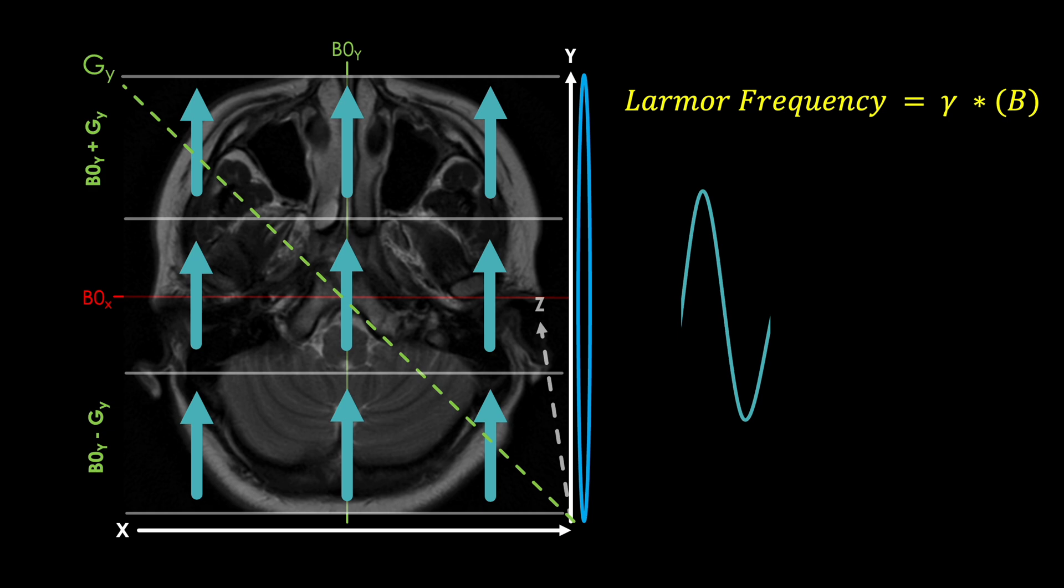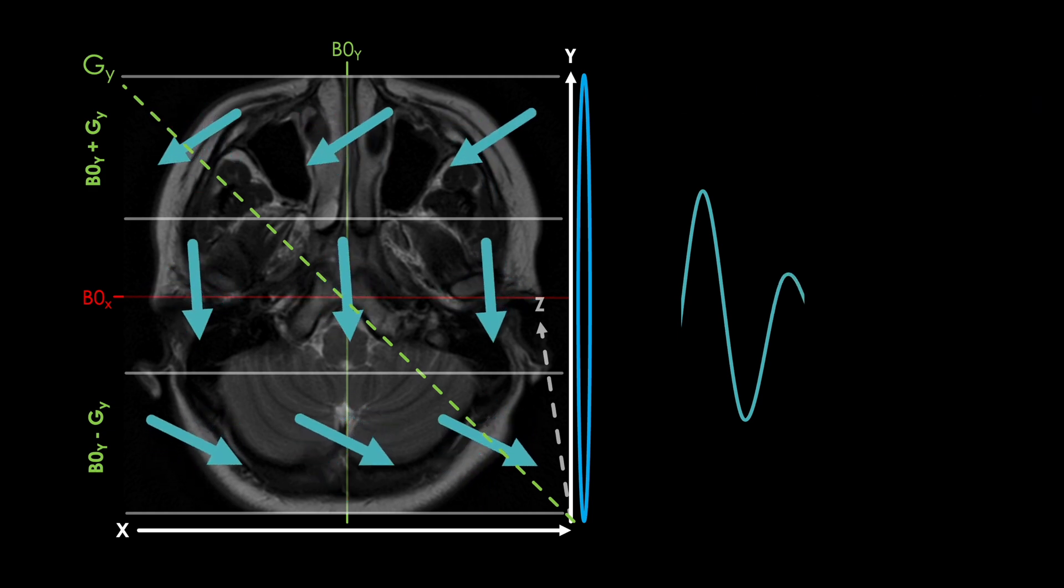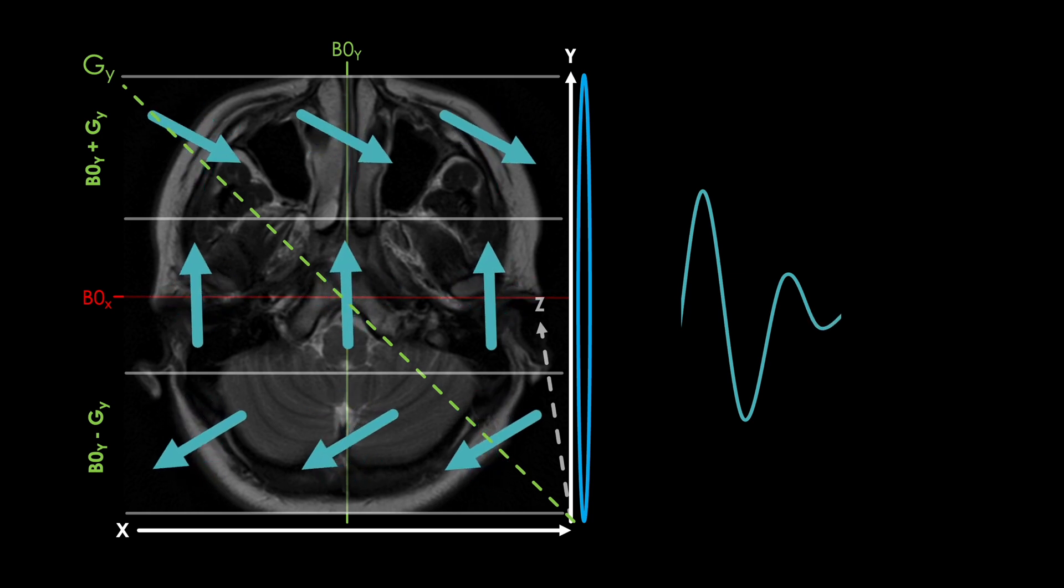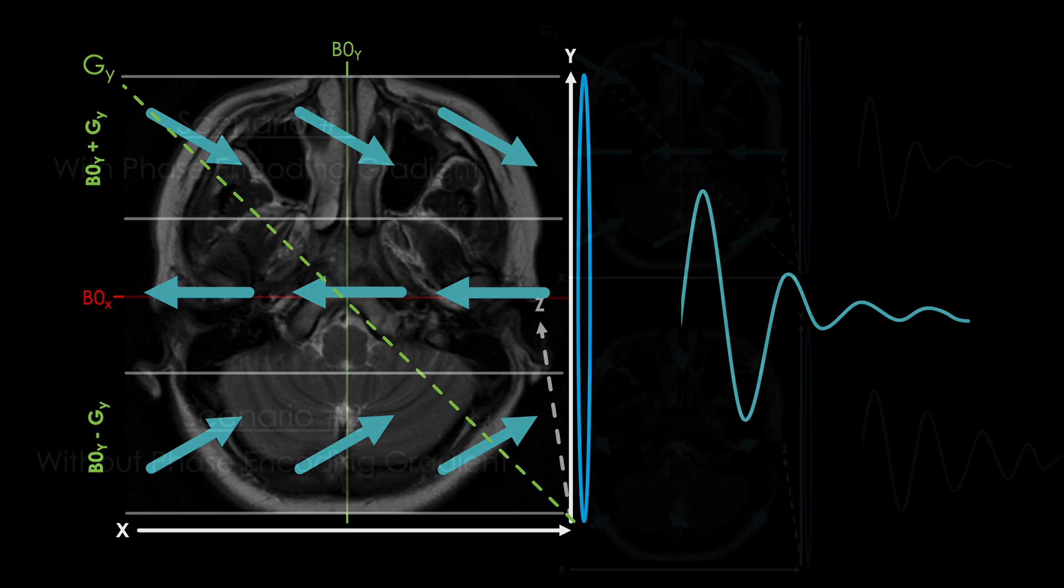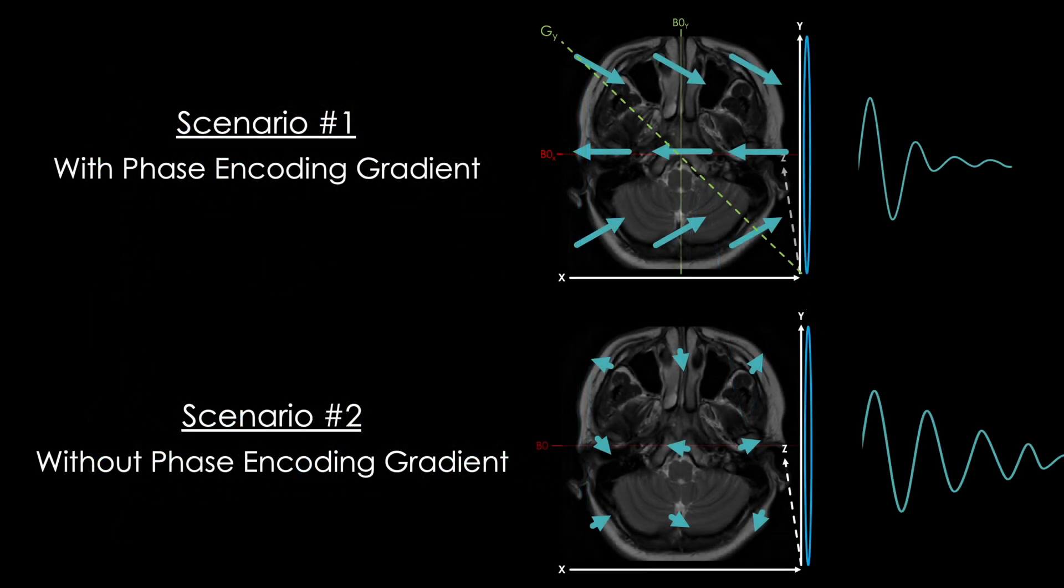So as long as this gradient field is applied, the protons in the top row will spin faster than the middle row, and the middle row will spin faster than the bottom row, and this will directly impact our signal. You can now appreciate that with the phase encoding gradient, we are forcing a dephasing to happen separate from the natural T2 decay dominating the second scenario. And this dephasing occurs the moment we turn this gradient on. It also doesn't affect every single proton like in our second scenario, but is spatially confined to rows within the image, thus somewhat preserving the net magnetizations within the voxels themselves.